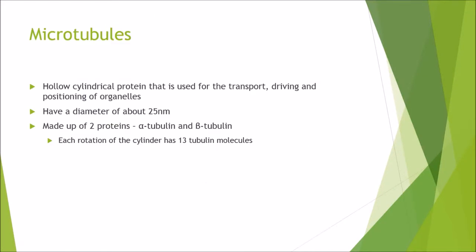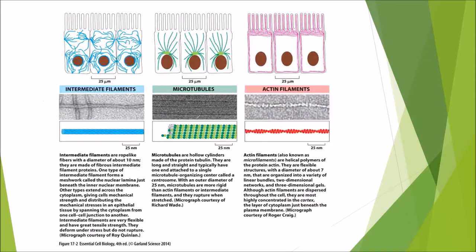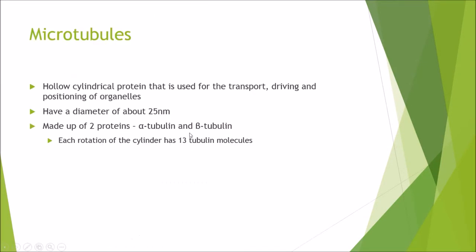Microtubules are hollow cylindrical structures used for the transport, driving, and positioning of organelles. They have a diameter of about 25 nanometres and are primarily made up of two proteins: alpha tubulin and beta tubulin. They make up a tube shape, and each rotation of that cylinder has 13 tubulin molecules.